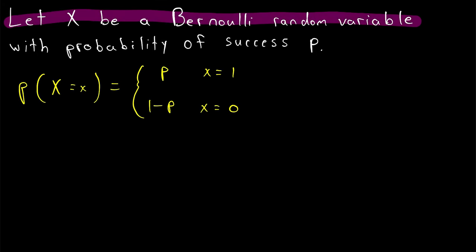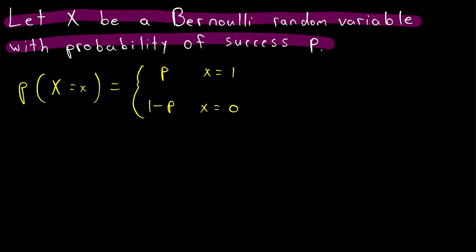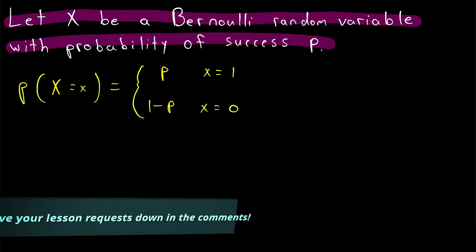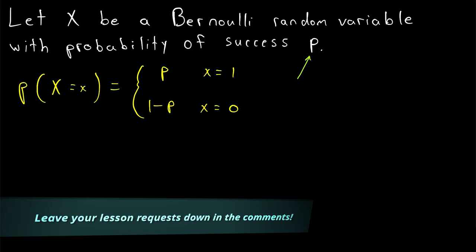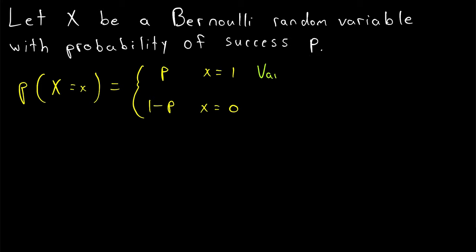Let x be a Bernoulli random variable with probability of success p. This is sometimes called the parameter of the Bernoulli random variable. We want to know what is the variance of this Bernoulli random variable — that's what we'll be going over in today's Wrath of Math lesson. We'll be deriving the variance of a Bernoulli random variable.